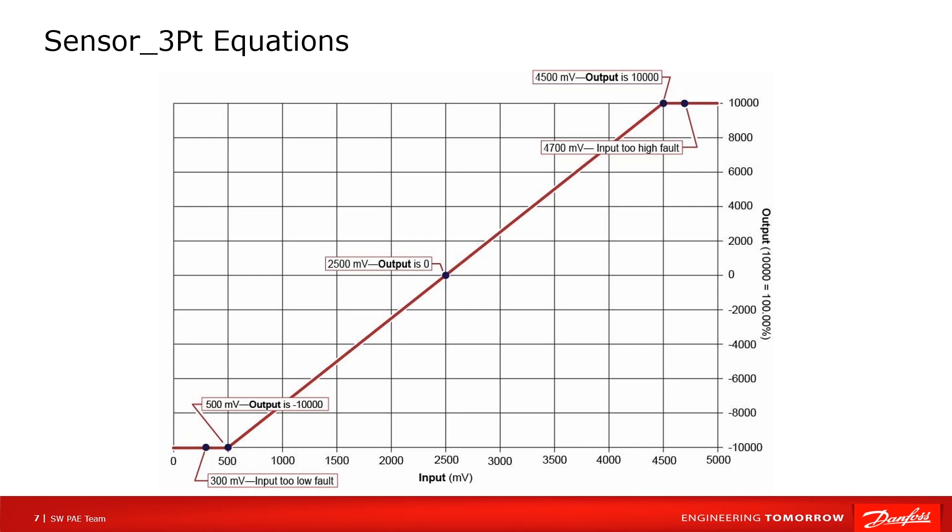We can find in the trace, when input is at 2500, the output is 0. When input is lower than 500, output remains at minus 10000. Fault points are 300 and 4700.